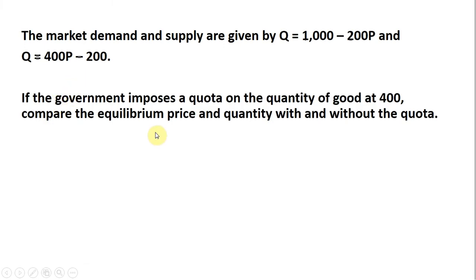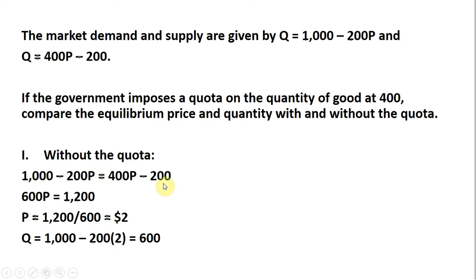If the government imposes a quota on the quantity of the good at 400, we want to compare the equilibrium price and quantity with and without the quota. Without the quota, we're going to set quantity demanded equal to quantity supplied.